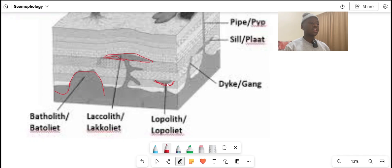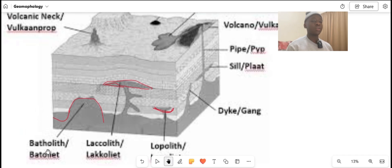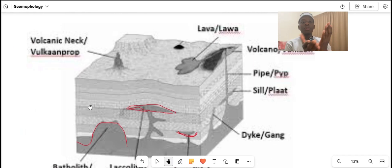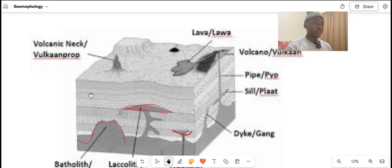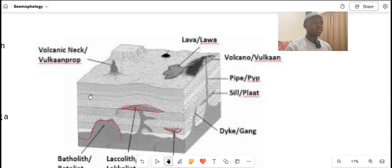Lopoliths are these rocks here. Sometimes I like to refer to them as a bowl or a saucer because they're shaped as a bowl or a saucer. Those are the three types of rocks.